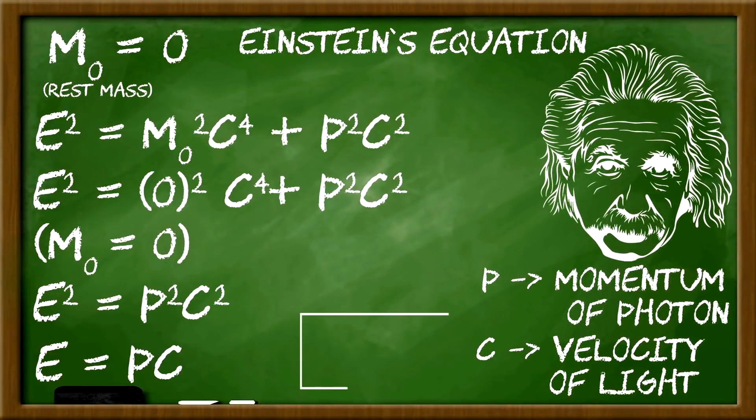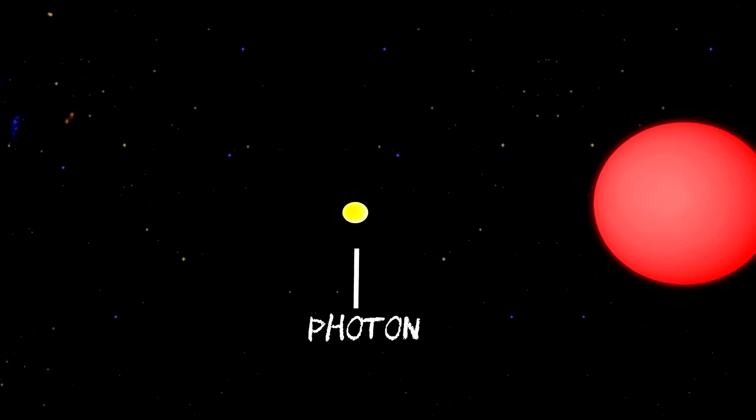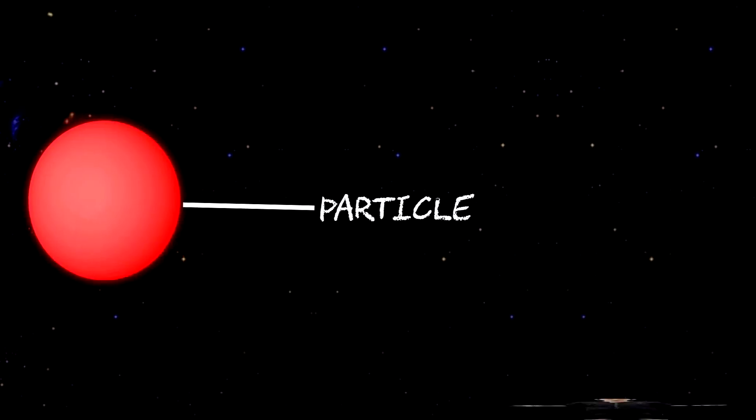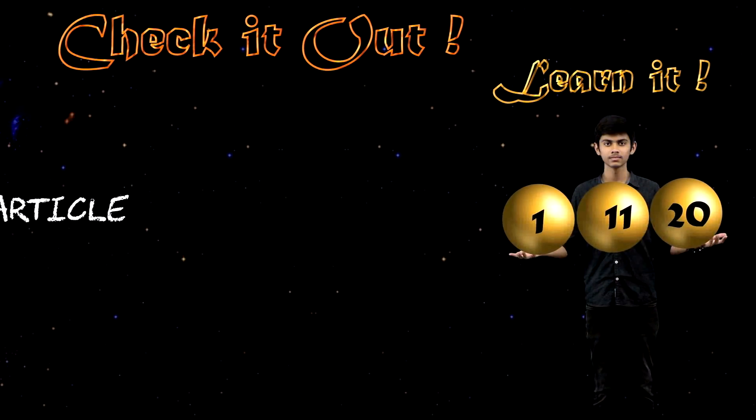Though a photon has zero rest mass, it carries a tiny momentum as per Einstein's equation. So when a photon collides with a particle, it changes its momentum by a tiny bit. This is the technique behind laser cooling.